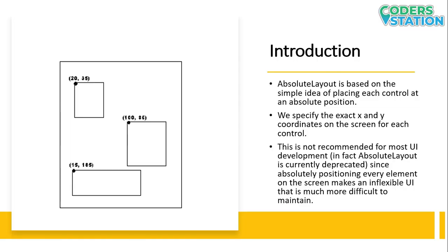Absolute Layout is the layout that allows you to specify the exact location of the child views within the parent view using absolute coordinates. Unlike other layouts which are based on grid or a flow, Absolute Layout lets you precisely position views on screen by specifying the exact X and Y coordinates.